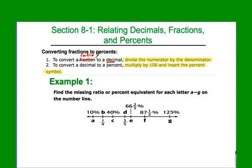It's very easy to see how we go back the other way. If I have a percent, I just divide by 100 and that gives me the decimal. And then, to change decimals to fractions, you look at the place value of the last digit and that tells you the denominator.